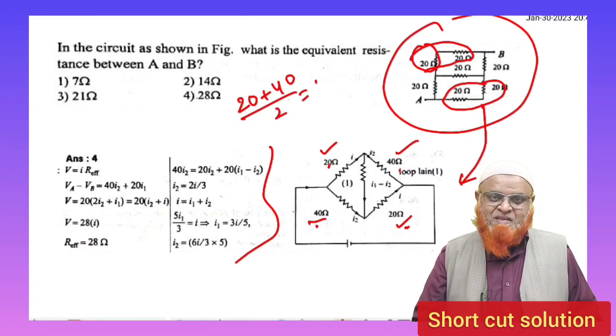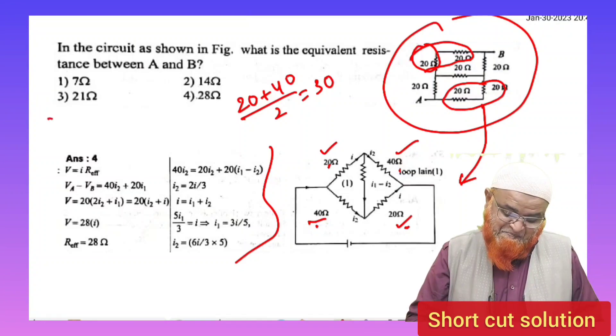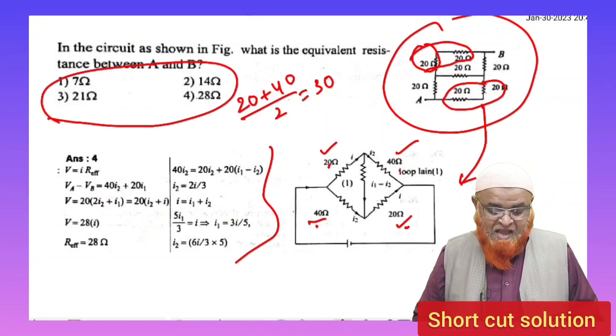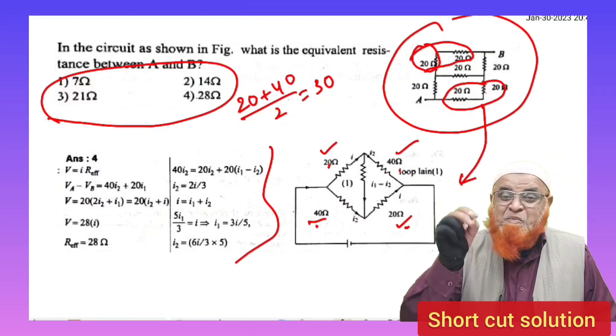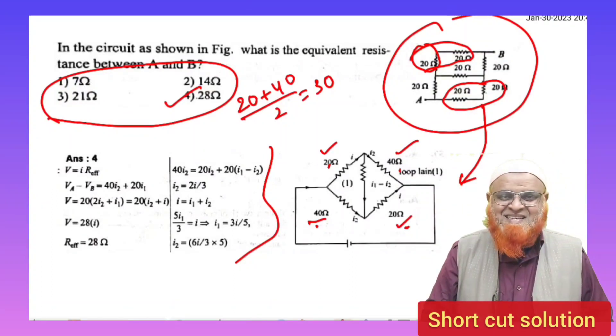And divide with 2. What is the answer you are getting? You are getting 30. Is it among the four options? Select the option which is very very close to 30. That is going to be your answer.